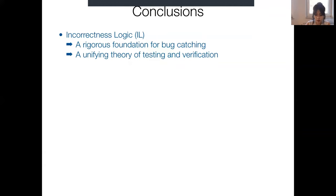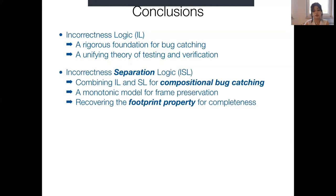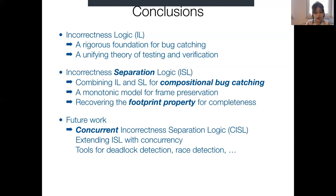That brings me to the end of the talk. I've shown a brief glimpse of incorrectness logic and how we extended it by combining it with separation logic to get a compositional bug catcher, and how we had to fix the original model to get the monotonicity property. The paper covers more about recovering the footprint property and completeness. For future work, we're hoping to extend ISL with concurrency — currently working on CISL, Concurrent ISL — which will allow building tools for race detection and deadlock detection.